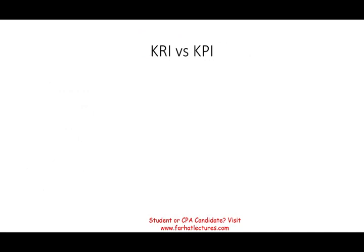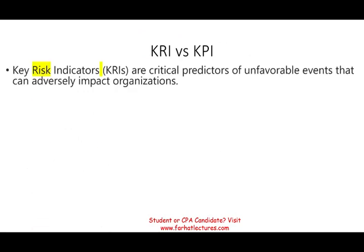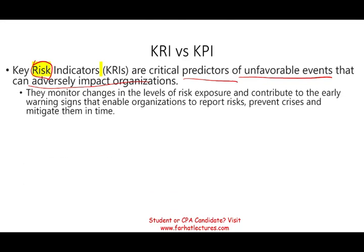When reporting on risk, you want to know the difference between KRI and KPI. KRI — Key Risk Indicators — are predictive. They give you a forward-looking, futuristic view of unfavorable events that could adversely impact the organization. They monitor changes in risk exposure and contribute as an early warning system. They can be quantified as percentages or numbers, or expressed as high, medium, or low.